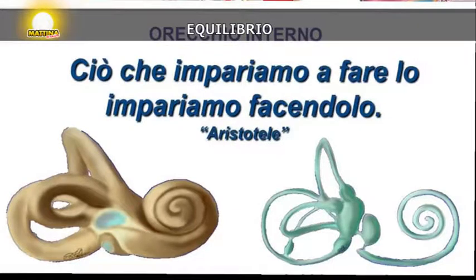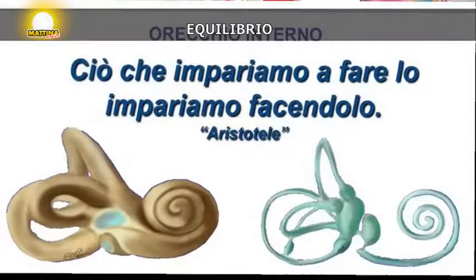Inside the inner ear we have both an anterior zone — the cochlea, which allows us to hear — and a posterior part consisting, as we can see from the image, of two chambers, the small blue ones, which are the utricle and the saccule, and then three canals. We are talking about very small structures, just two or three millimeters, yet they have this great capacity to keep us in balance. It is very important for us doctors, for those who deal with vestibology and ENT, to know the function of these structures.